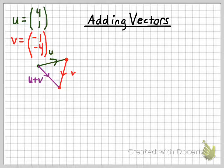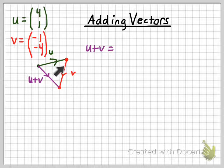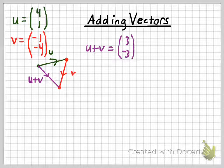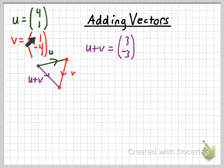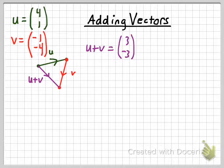Now let's look at the component form of u plus v. That vector goes three units right and three units down, so the column vector form is [3, -3]. Here's the arithmetic standpoint: if you look at the column vector forms of u and v, you simply add corresponding components. Four plus negative one is positive three; one plus negative four is negative three. When adding two vectors, just add the corresponding components.